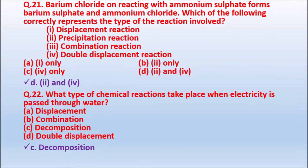Question 21: Barium chloride reacts with ammonium sulphate to form barium sulphate and ammonium chloride. Which of the following correctly represents the type of reaction involved? Options: displacement reaction; precipitation reaction; combination reaction; double displacement reaction. Options given as — A: one only; B: two only; C: four only; D: two and four only.